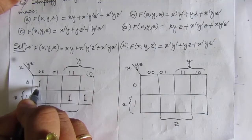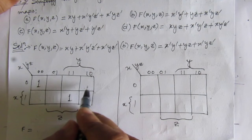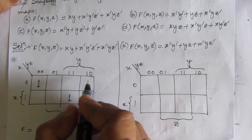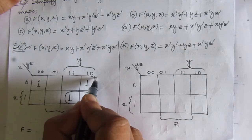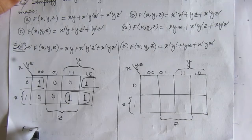Then we have x̄yz̄. x bar is this row, y corresponds to these two columns, and z̄ means we find the column where z equals 0. From these two common columns we get the box where z equals 0, so we put 1 there. All other values are 0.